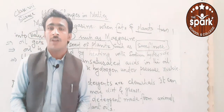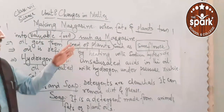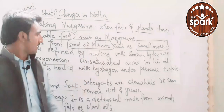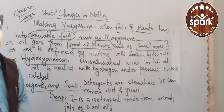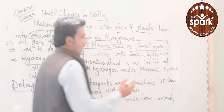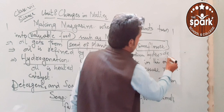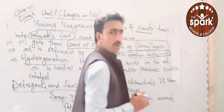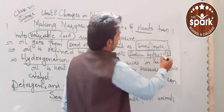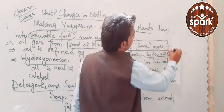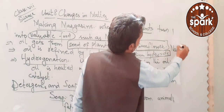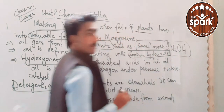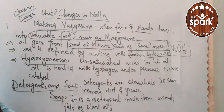When we get oil from fats and plants, we then need to refine the oil. The oil is refined by heating with sodium hydroxide — NaOH — which is a base. We take that oil and refine it — clean it — using sodium hydroxide to make it suitable for use.